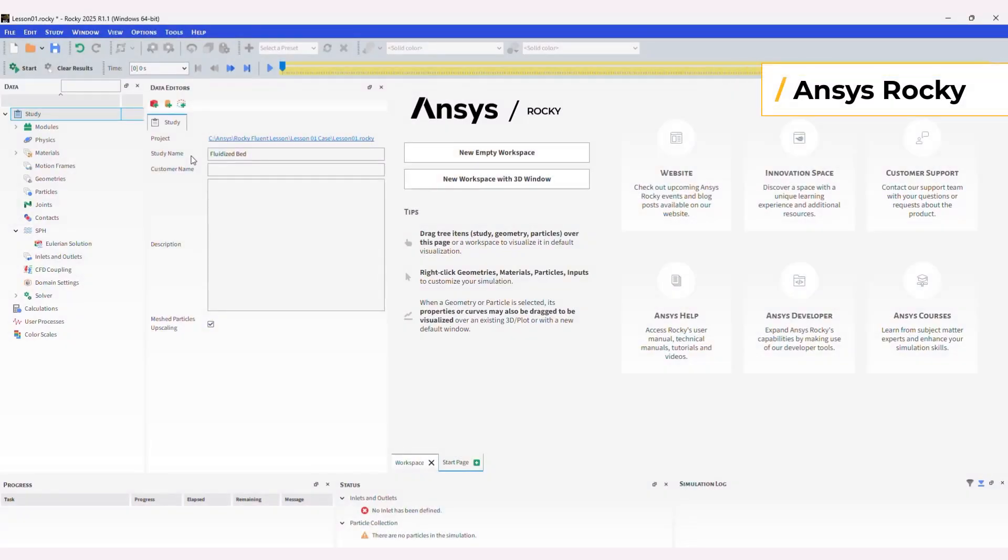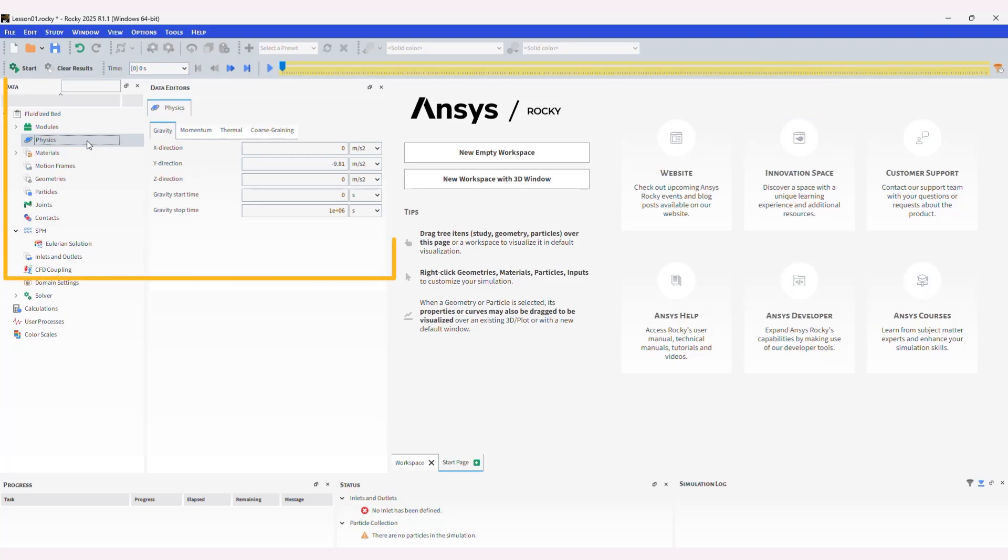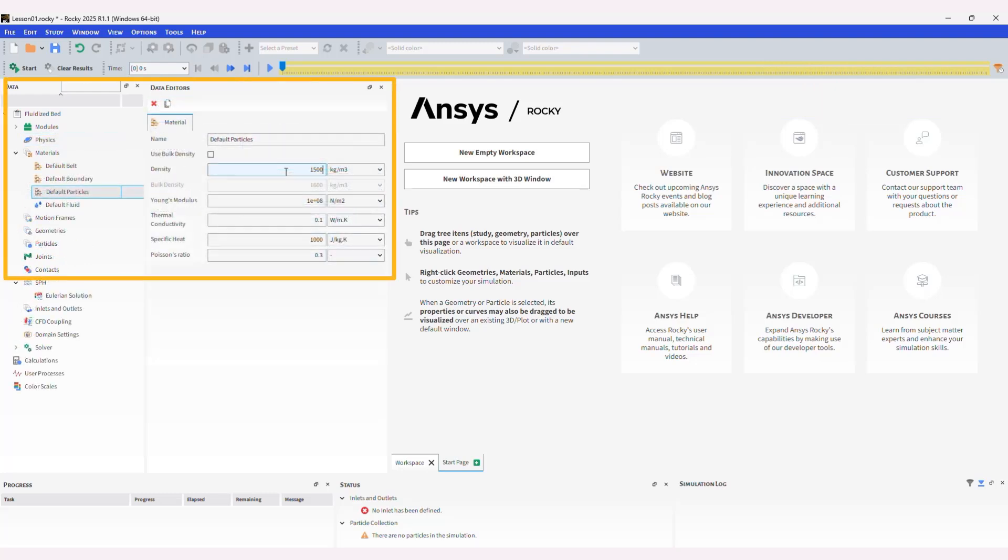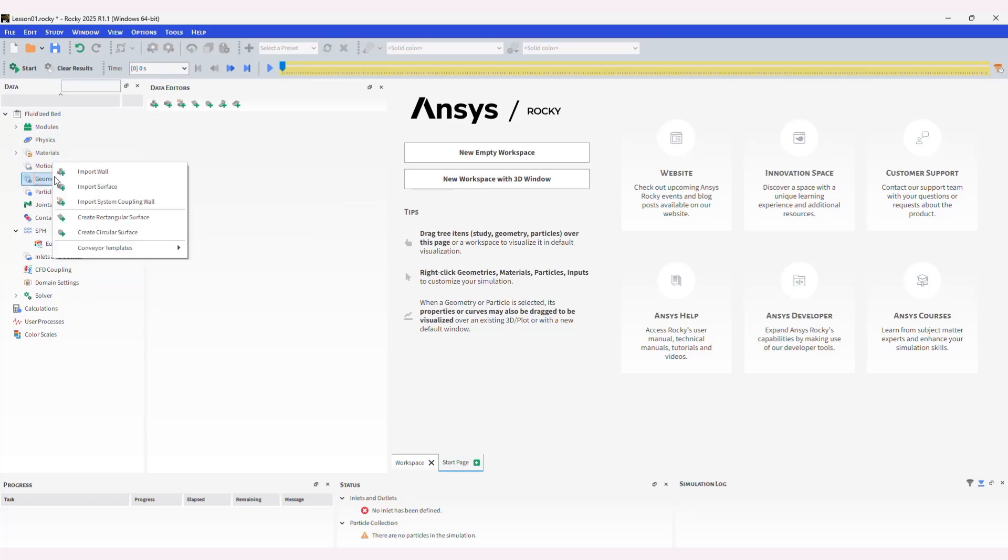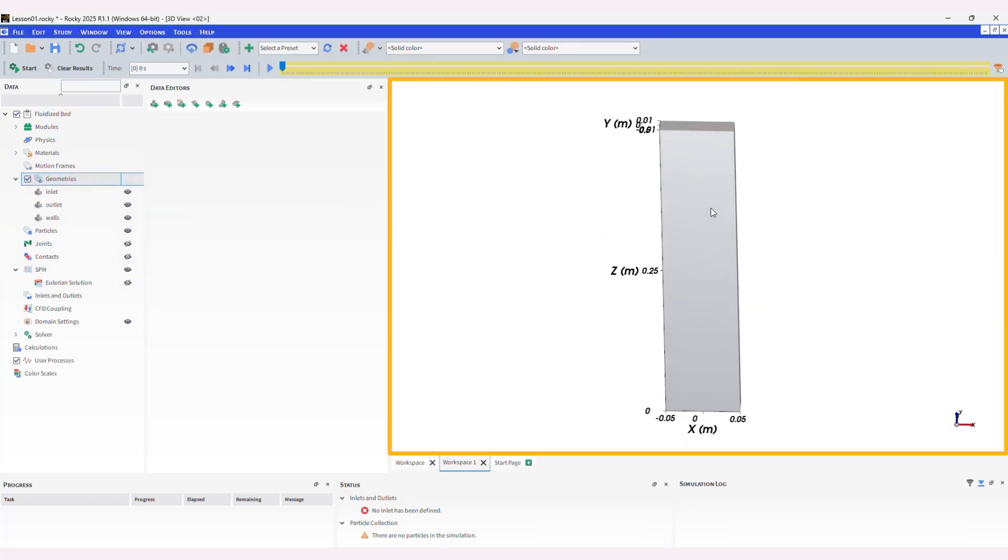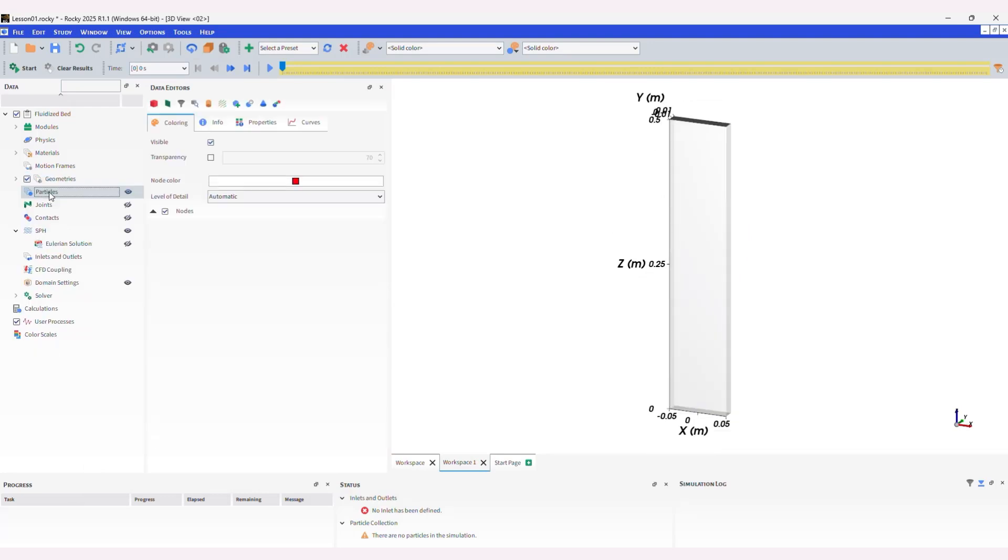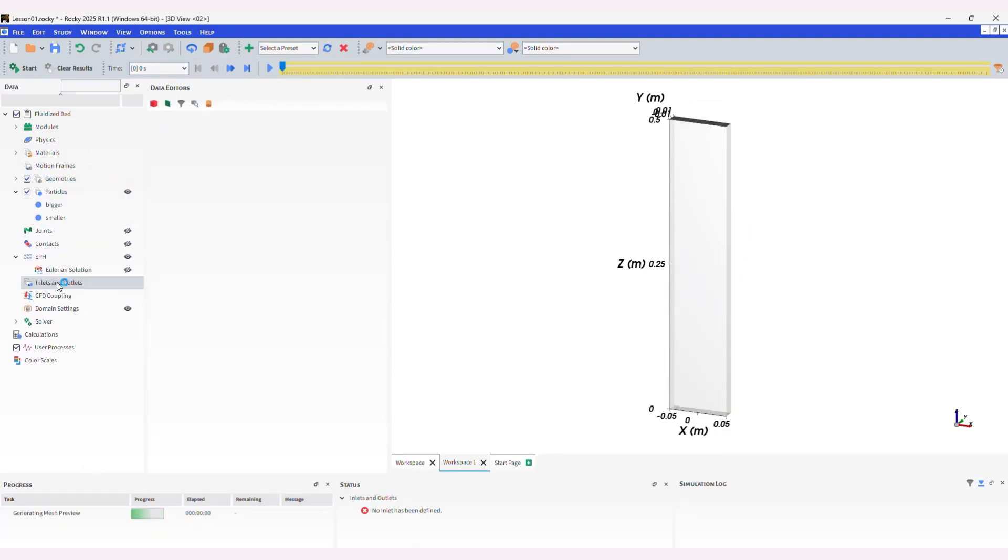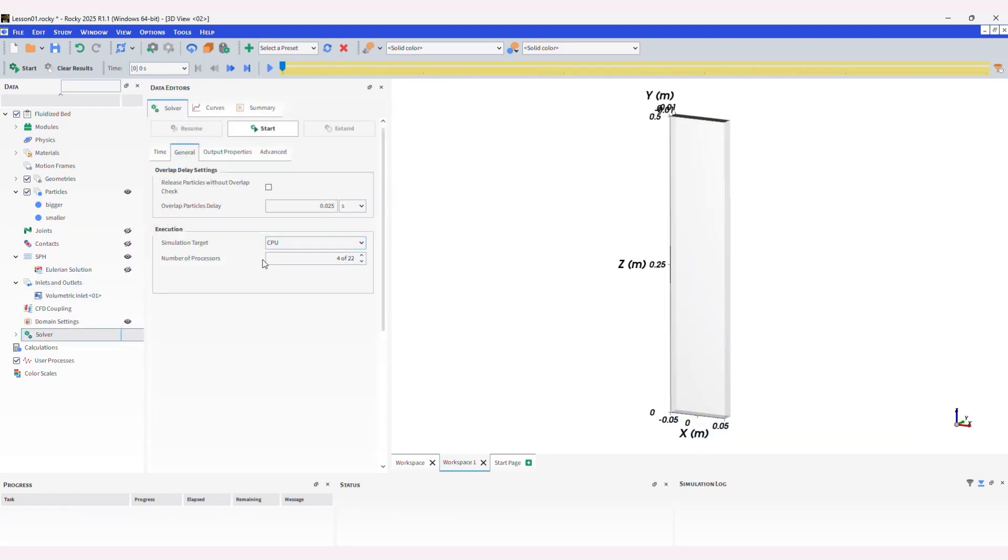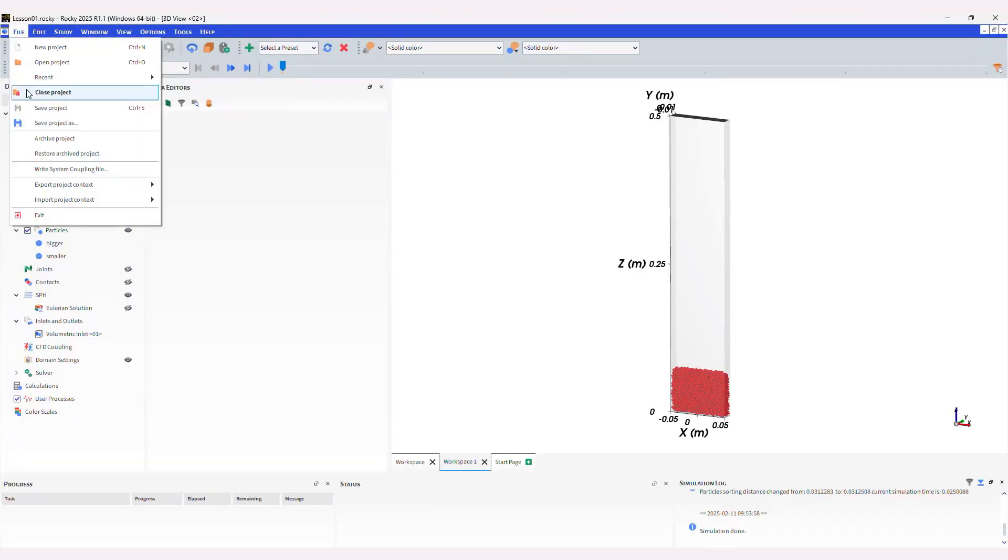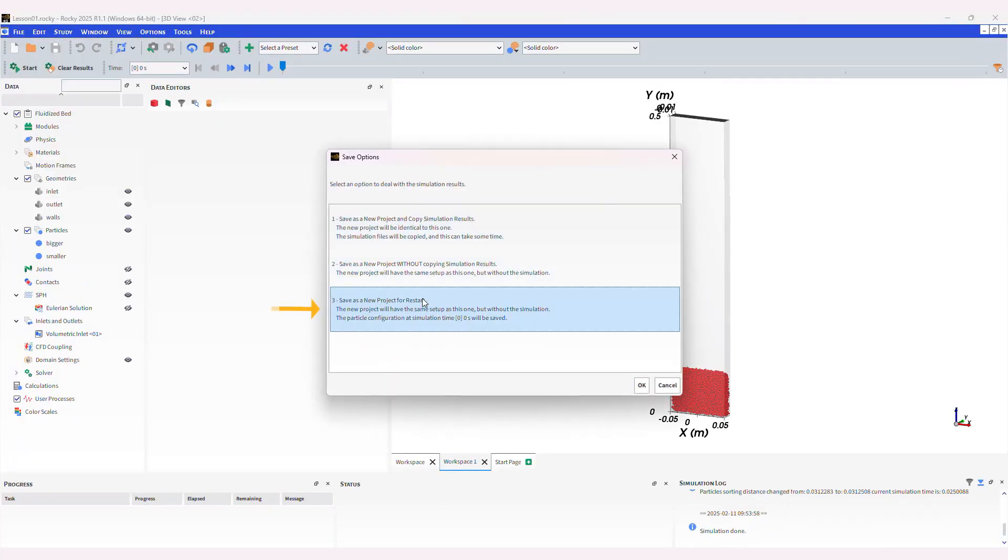For the ANSYS Rocky part of the setup in this tutorial, the project starts by defining the physics and the material properties. Next, the geometry components are imported from a .cast file exported from Fluent. After that, two types of particles are created, and then the parameters for creating a volumetric inlet are defined. When the setup is done, the simulation is ready to run. This project is saved for restart and will be used for the coupled simulation.